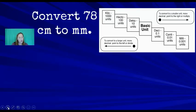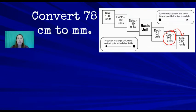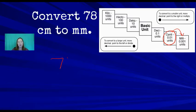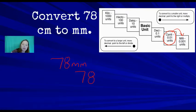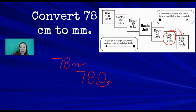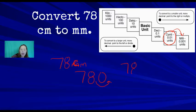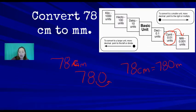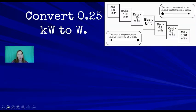Practice problem: convert 78 centimeters to millimeters. Starting at centimeters and moving one place to the right (toward smaller units), move the decimal one place to the right. So 78 centimeters equals 780 millimeters.